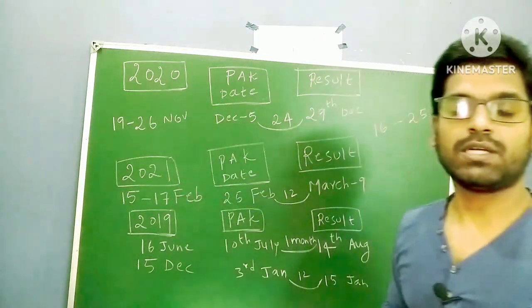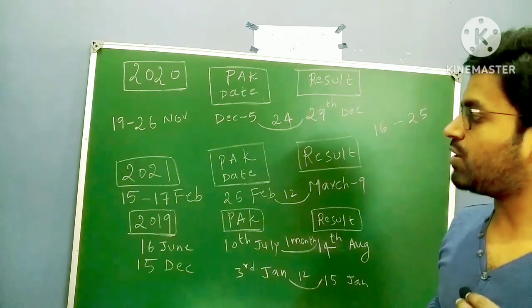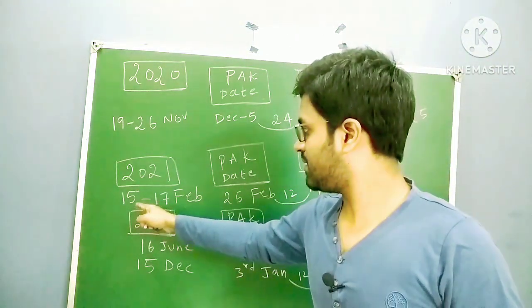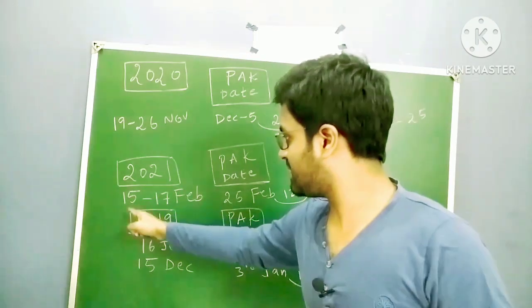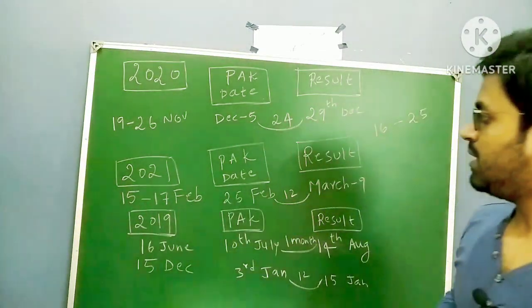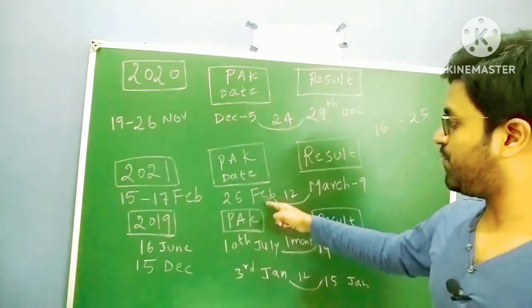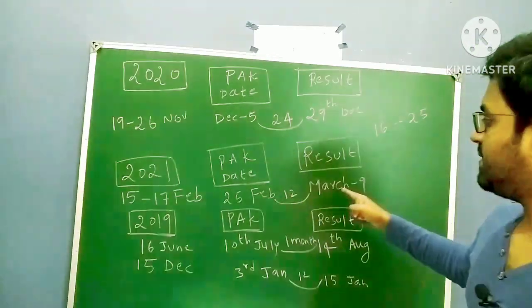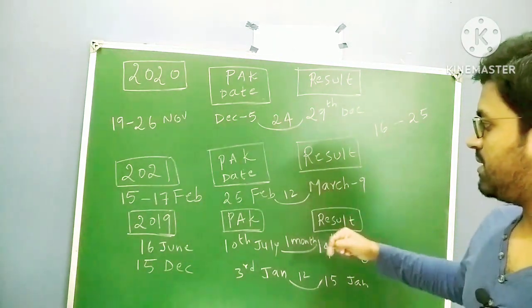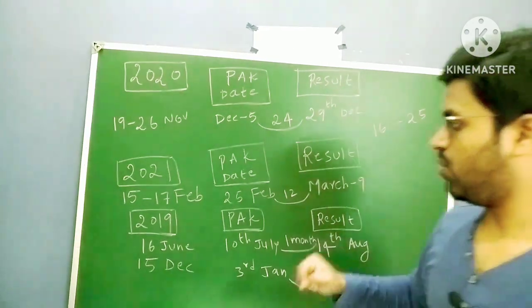Next, 2021, Corona was not that intense. So if you observe, the exam date was 15th to 17th February, provisional answer key to challenge the questions was 25th February, and the result date was March 9th. The difference is 12 days.